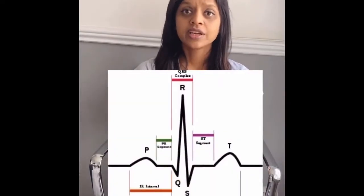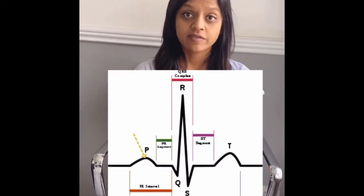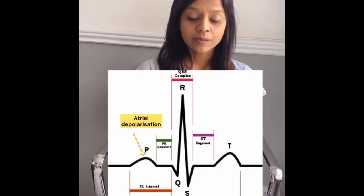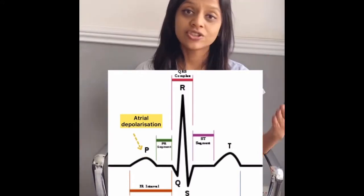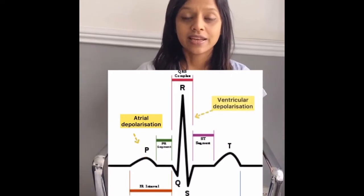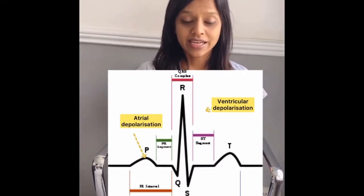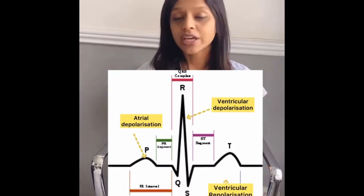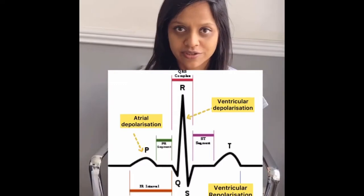You have a P wave, a QRS complex, and a T wave. The P wave represents atrial depolarization. The PR interval represents the time taken for the impulse to travel from the SA node to the AV node. The QRS complex represents ventricular depolarization, and the T wave represents ventricular repolarization. We cannot see atrial repolarization because it gets merged with ventricular depolarization.